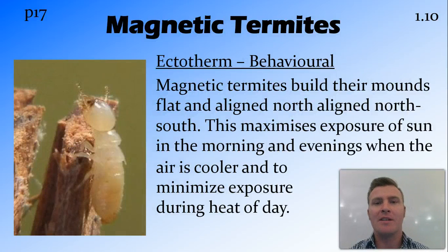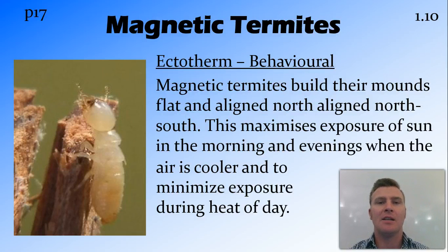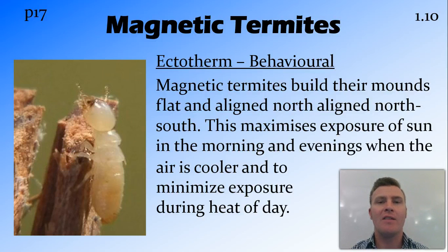Now for an ectotherm: magnetic termites, which was the opening screen to this video. They build huge flat mounds that are aligned north to south. This means that in the morning and in the afternoon when the sun is low, the heat is absorbed by the mound. However, during the middle of the day when the sun is very high in the sky, it minimises that profile so that not too much heat is absorbed at those times.